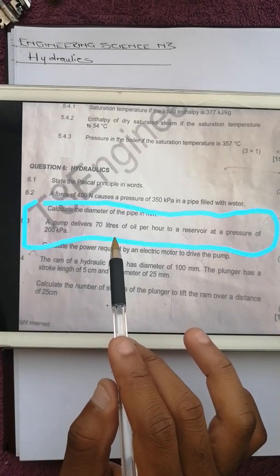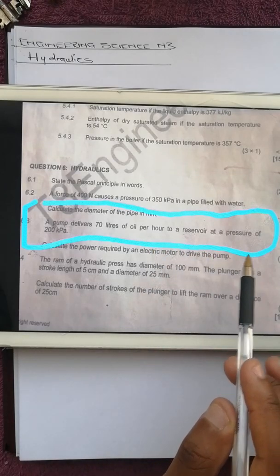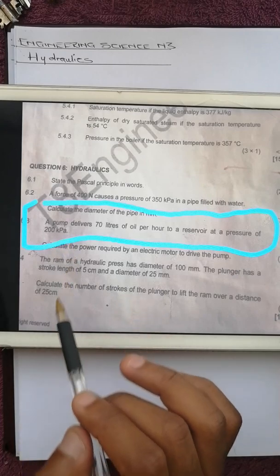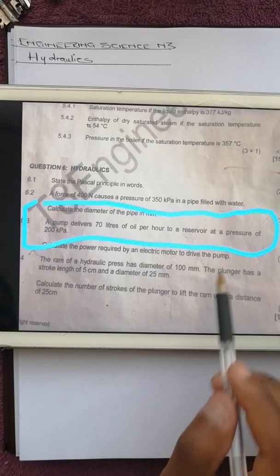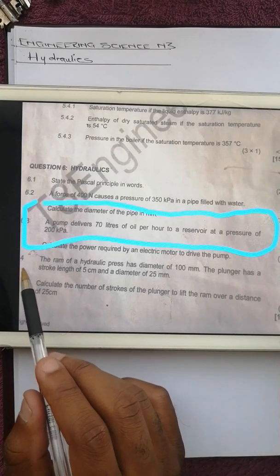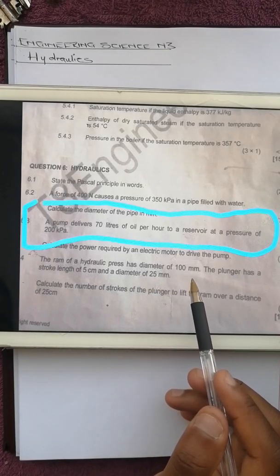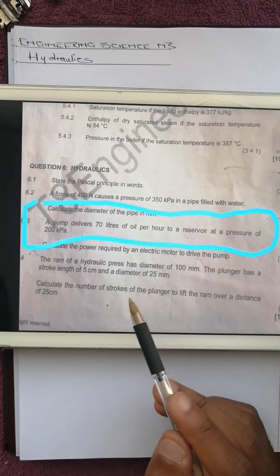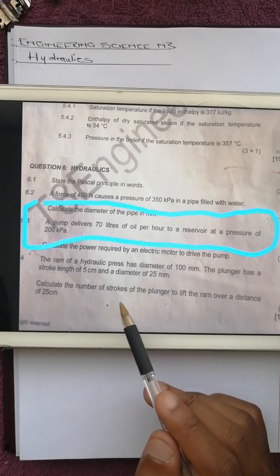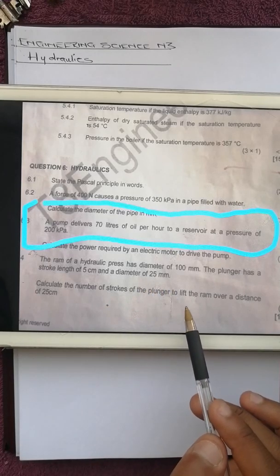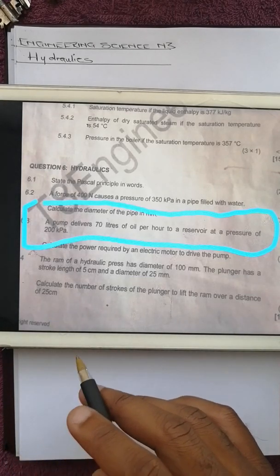Question 6.3: a pump delivers 70 litres of oil per hour to a reservoir at a pressure of 200 kilopascals. Calculate the power required by an electric motor to drive the pump. Question 6.4: the ram of a hydraulic press has a diameter of 100 millimetres, the plunger has a stroke length of 5 centimetres and a diameter of 25 millimetres. Calculate the number of strokes of the plunger to lift the ram over a distance of 25 centimetres.